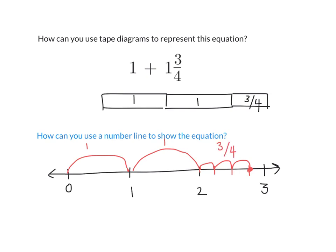So using a number line, I can show 1 plus 1 and 3 fourths. What is the answer, by the way? 2 and 3 fourths. Right, because I can see right here where my adding stops. The answer is 2 and 3 fourths. Very nice.